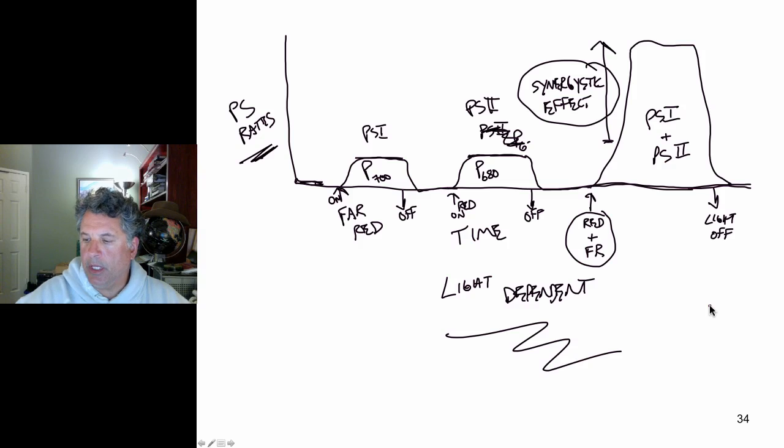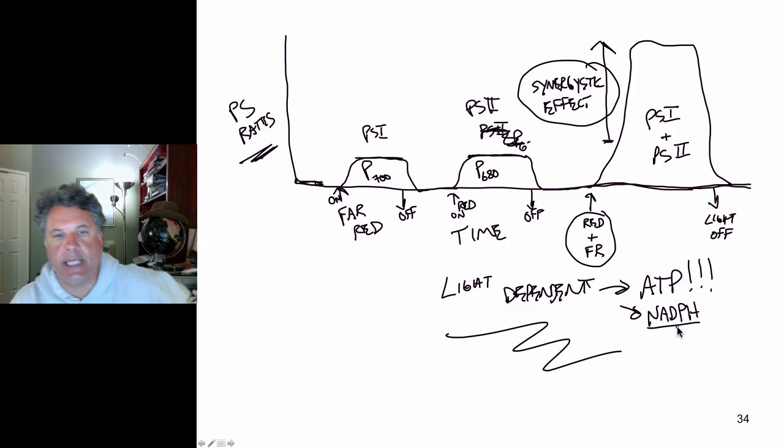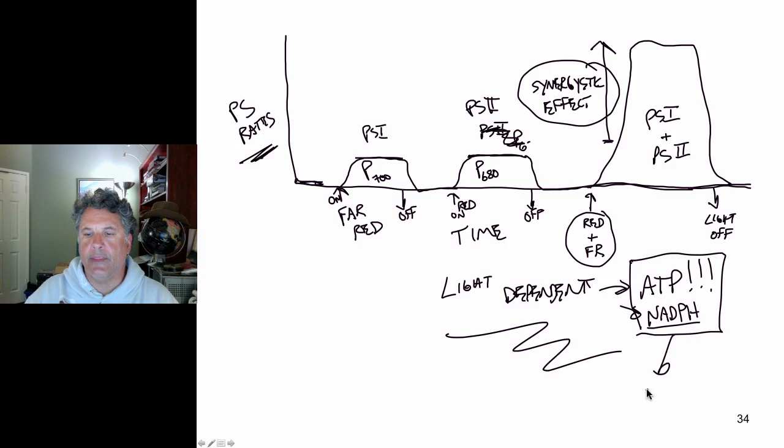And now we're ready to tackle what happens to the molecules produced by the light-dependent reaction, that is ATP, lots of it through chemiosmosis, and NADPH through electron transfer, through oxidation of NADP. We can now see how these molecules are utilized in the light-independent reactions, that is the fixation of carbon from CO2.